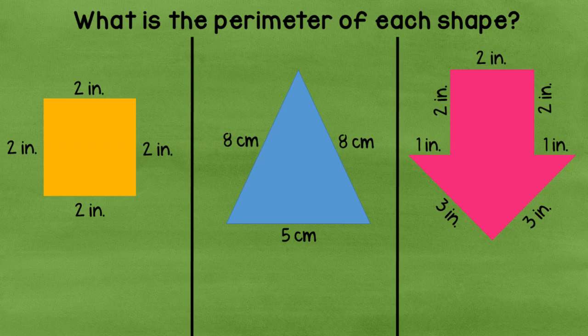Let's see if you can figure out the perimeter of each of these shapes. Take a look at that first orange square. It looks like an orange sticky note. And we know it's a square because there are four sides and they all have the same measurement. Two plus two plus two plus two. So if we added those up, two, four, six, eight. The perimeter would be eight inches.